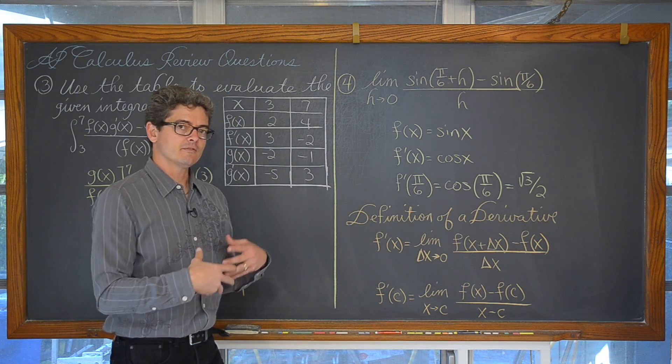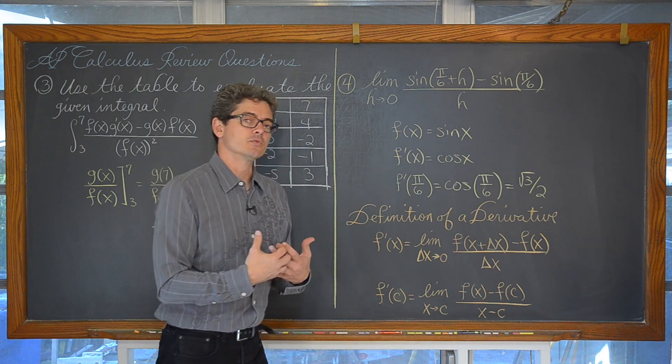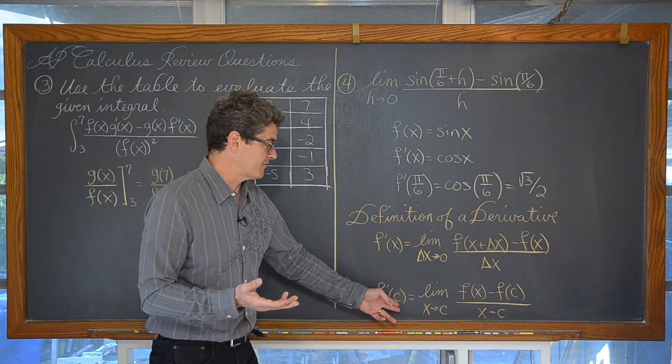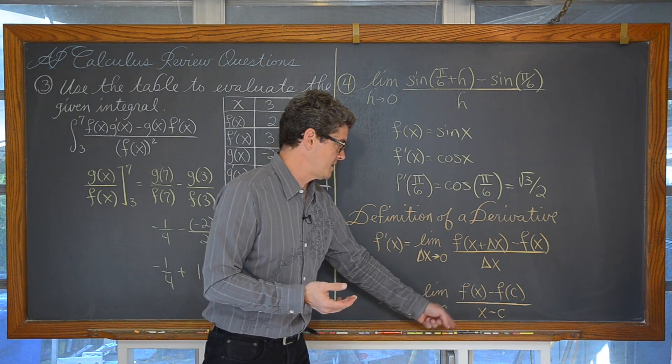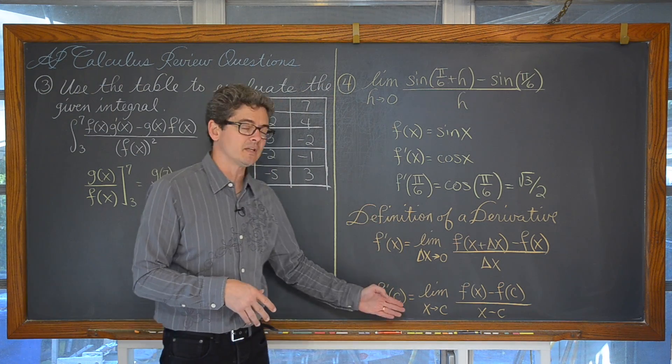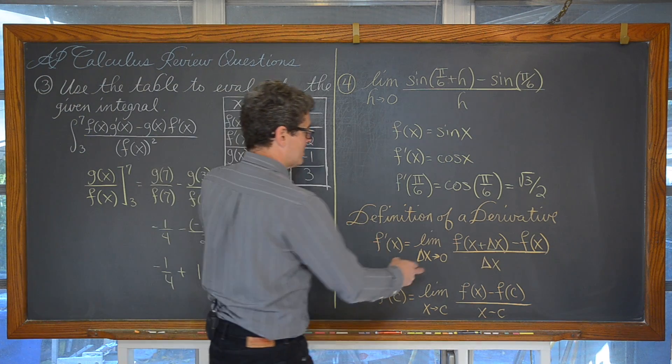My textbook, not quite sure if they're all the same, but the one I've been teaching out of for the last four years says that this is like an alternative form of a definition of a derivative. F prime of c is equal to the limit as x approaches c of f of x minus f of c over x minus c. You want to definitely have both of these definitions of derivatives memorized.